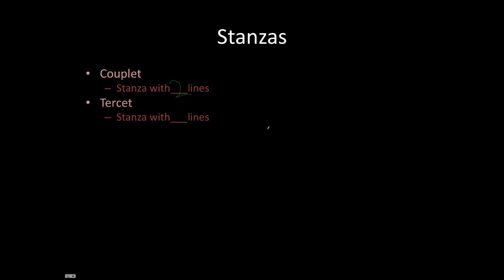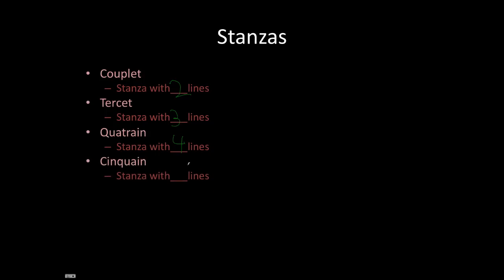Let's take a look at stanzas. A couplet is a stanza with two lines. A tercet is a stanza with three lines. A quatrain is a stanza with four lines. A cinquain is a stanza with five lines. A sestet is a stanza with six lines.